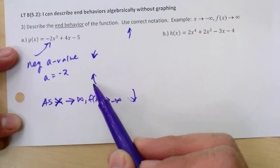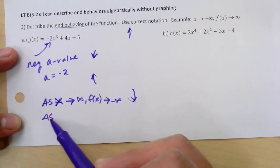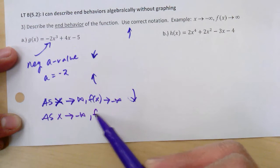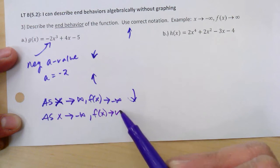Well, this one, x is actually going towards the left, so I'm going to say as x goes towards negative infinity, f of x is going upwards. f of x is going to positive infinity.